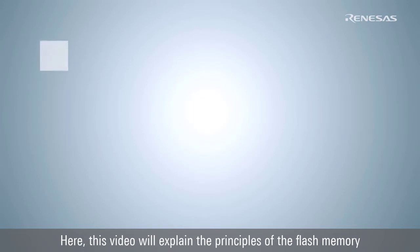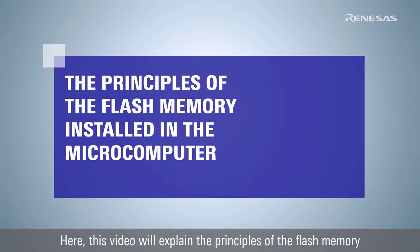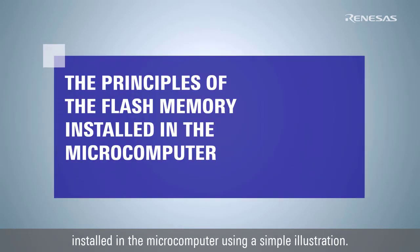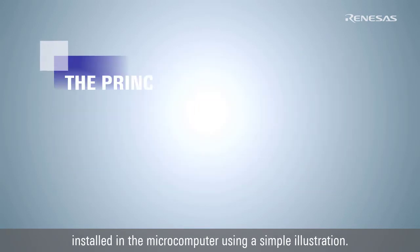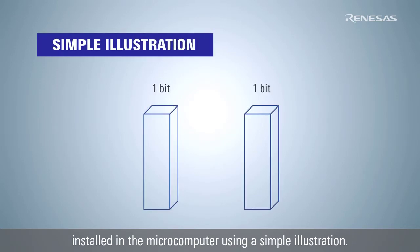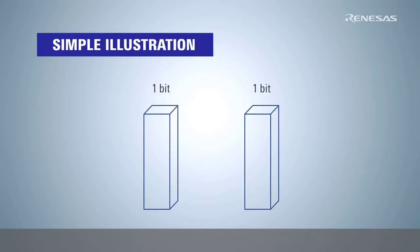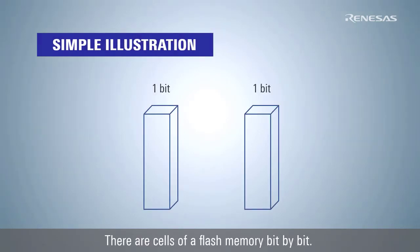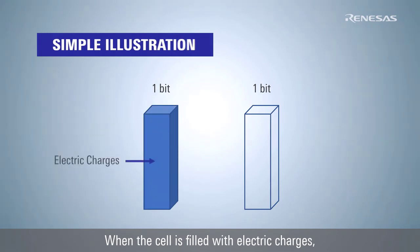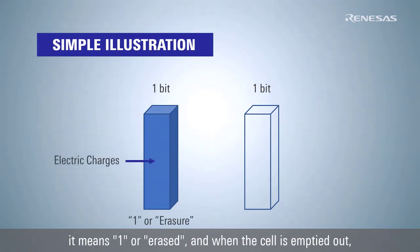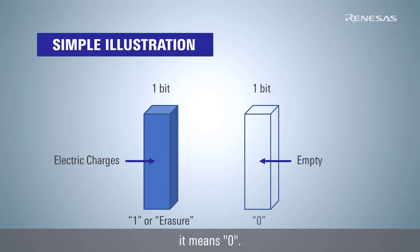This video will explain the principles of the flash memory installed in the microcomputer using a simple illustration. There are cells of a flash memory bit by bit. When the cell is filled with electric charges, it means one or erased, and when the cell is emptied out, it means zero.